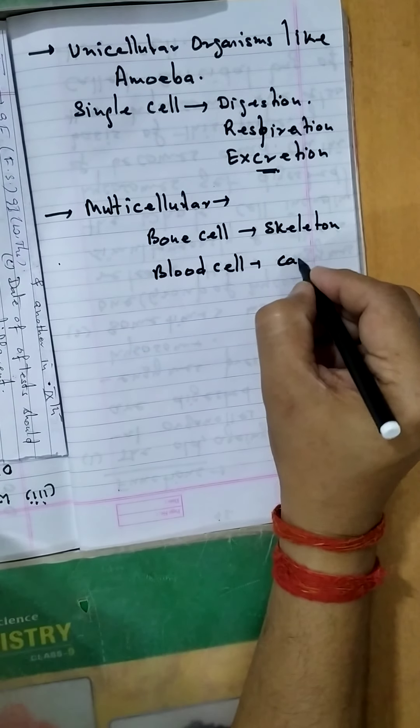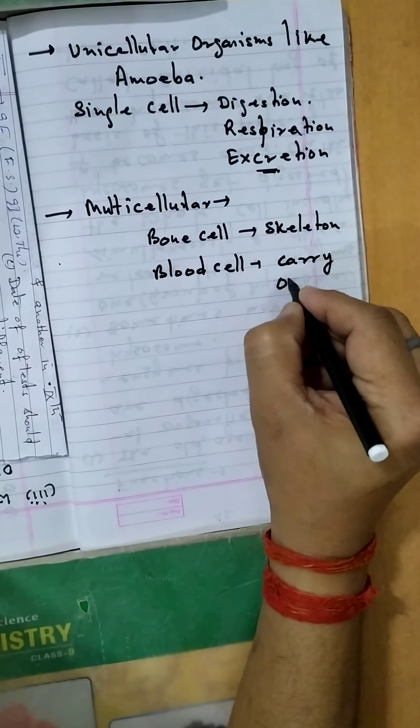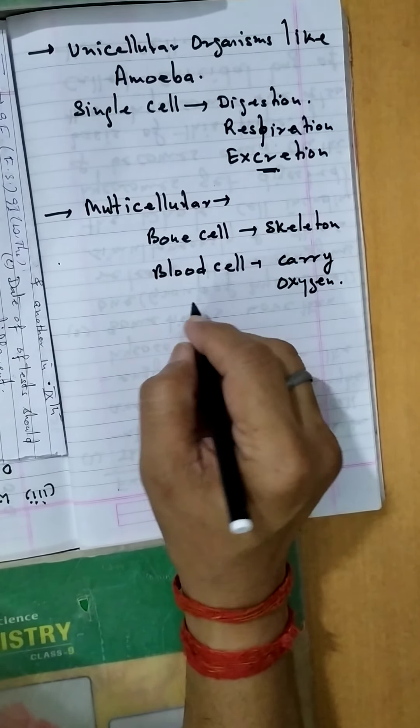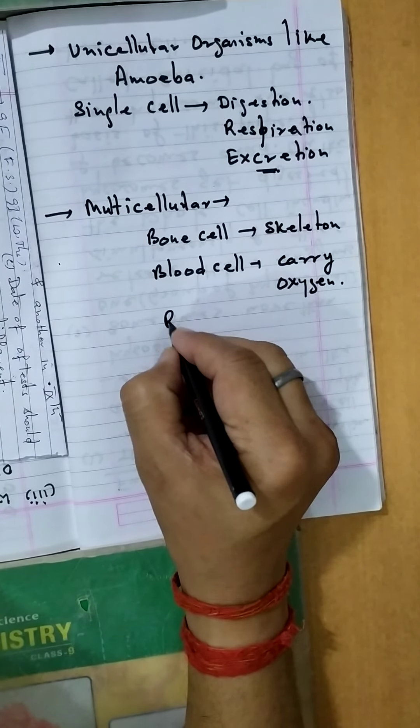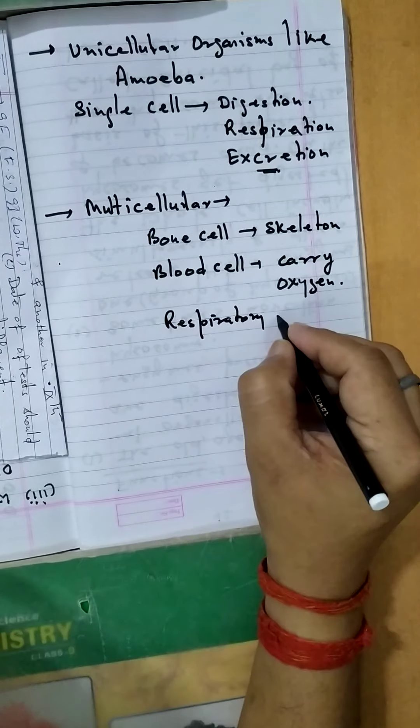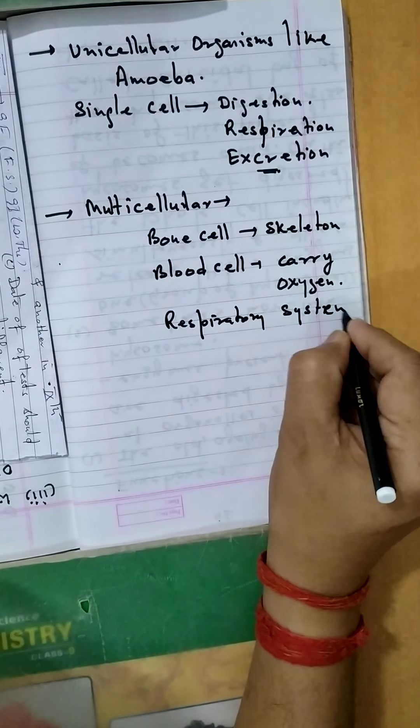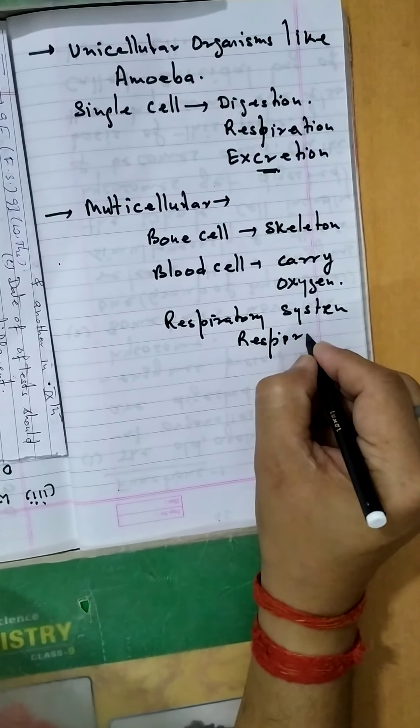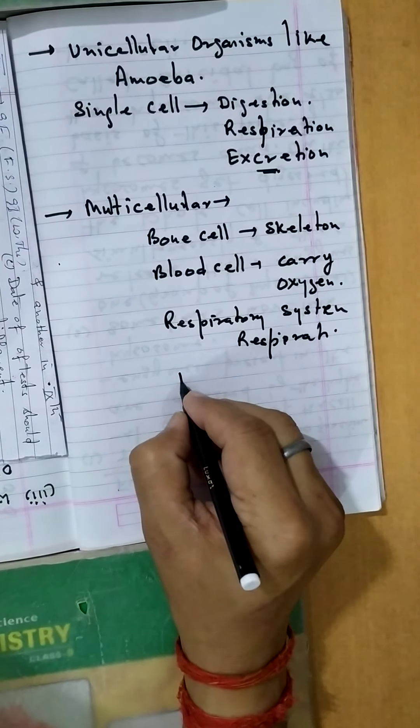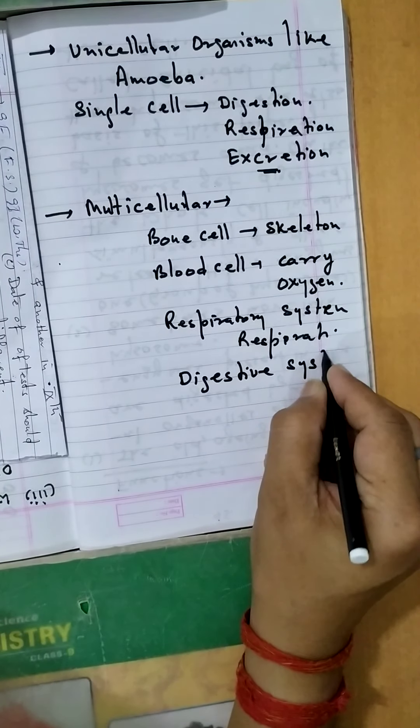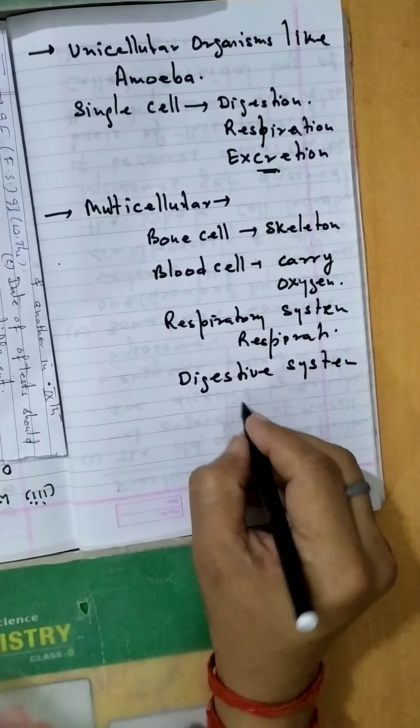Blood cells carry oxygen. Likewise, respiratory system for respiration, digestive system for digestion.